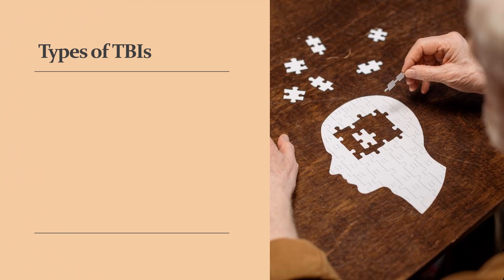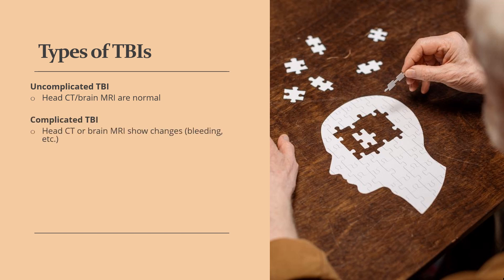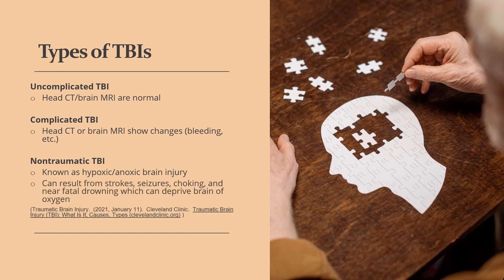In an uncomplicated TBI, the head CT or brain MRI are normal. In a complicated TBI, the head CT or brain MRI show changes such as bleeding. A non-traumatic TBI is also known as a hypoxic brain injury. This type can result from strokes, seizures, choking, and near-fatal drowning, which can deprive the brain of oxygen.